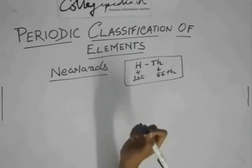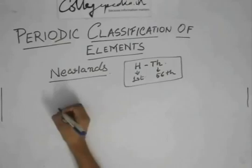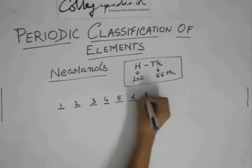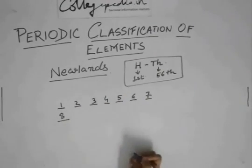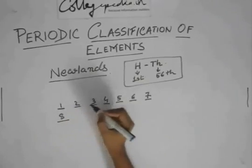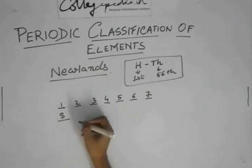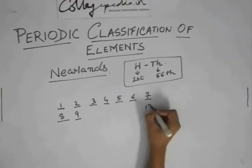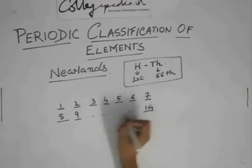What he did was write the elements numbered 1, 2, 3, 4, 5, 6, 7. Then after 7, he wrote element 8 down below element 1. He continued the pattern: 8, 9, 10, 11, 12, 13, 14, then 15 placed below 8, and so on.